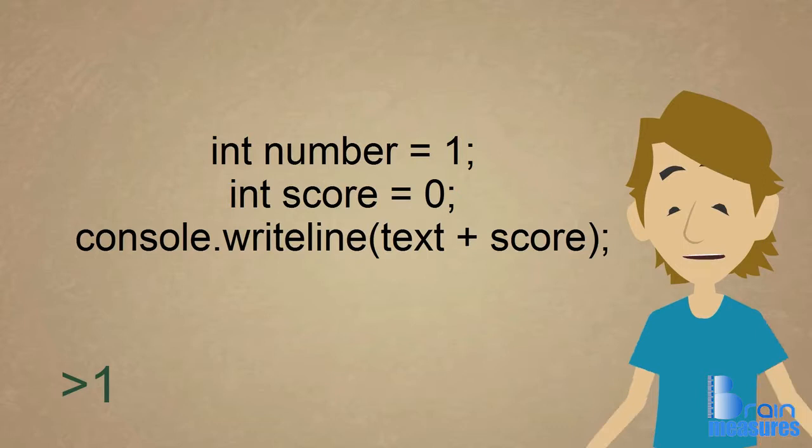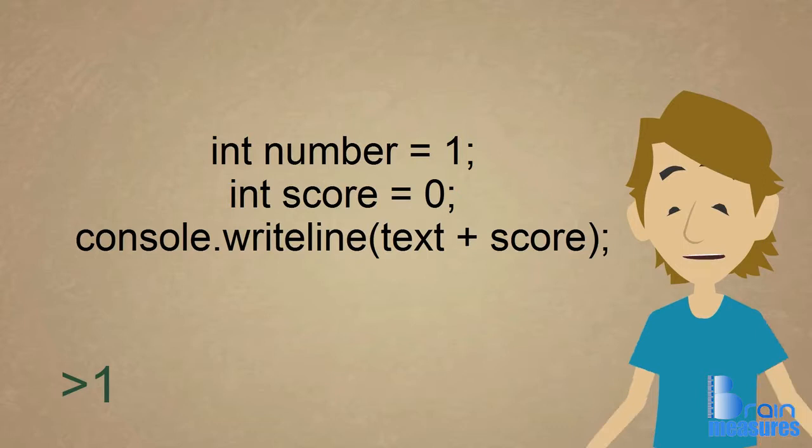We can also do a little bit of math. We will talk about math in another tutorial but for now let's do some simple addition. I have changed text to an int. Notice how it doesn't print one and zero but it adds them together. That concludes the tutorial. I'll see you guys next time.